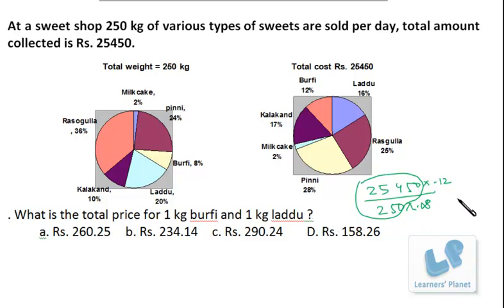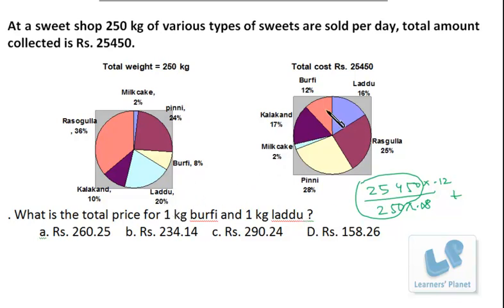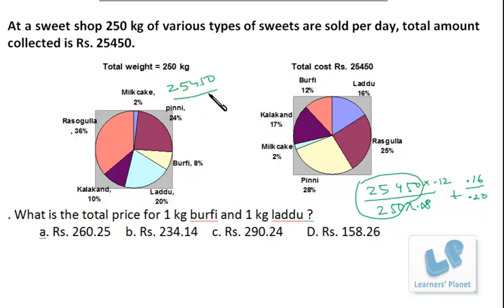Now we have to add the price of laddu also. We can take this data as common and add the price of laddu as well. What is the price of laddu? The contribution is 20% here and 16% here, so it's 0.16 by 0.20.